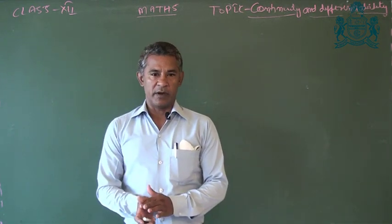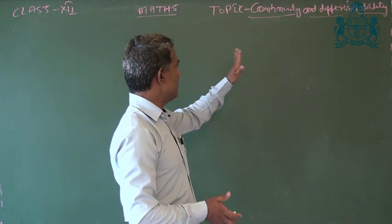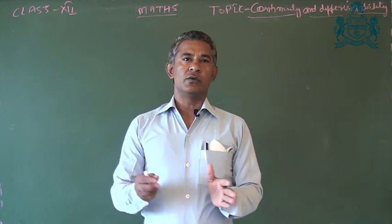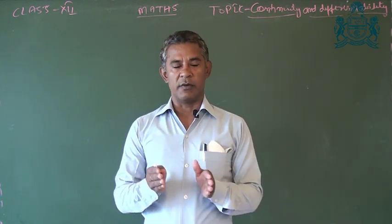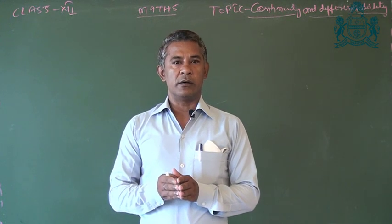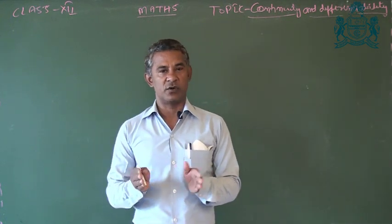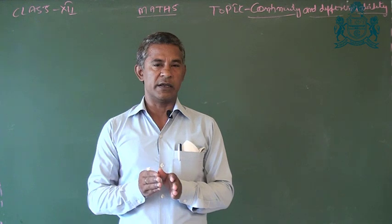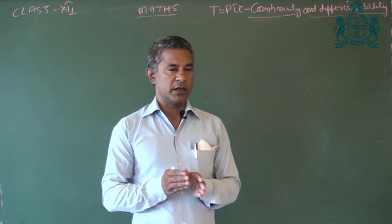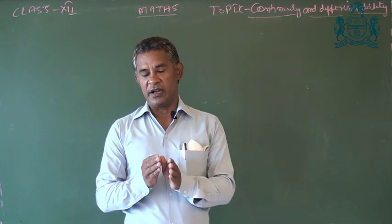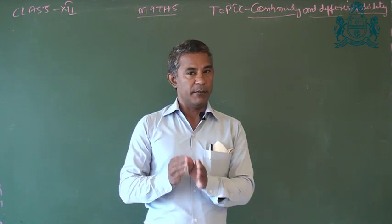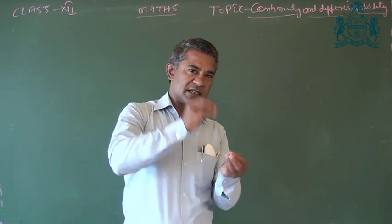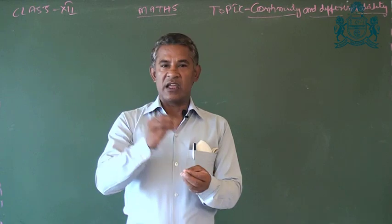Today's topic is continuity and differentiability. My math paper on RBC board carries 80 marks, 30 questions. This chapter in RBC board is number 6 — continuity and differentiability — and chapter number 7 is differentiation. Chapters 6 and 7 together carry 8 marks.